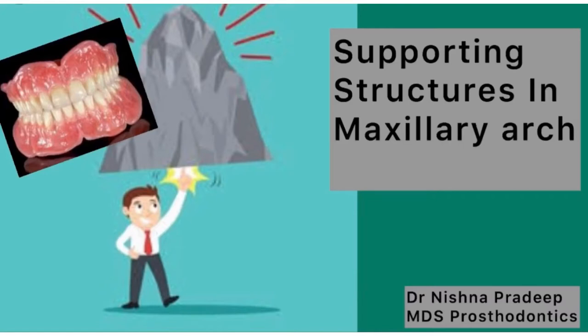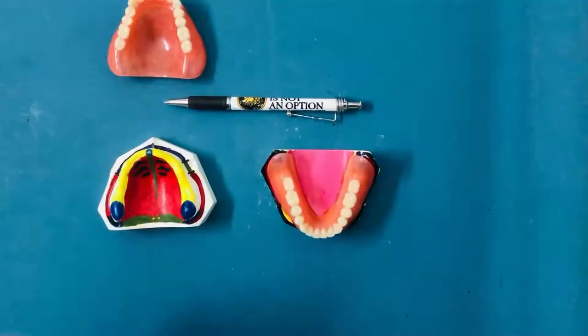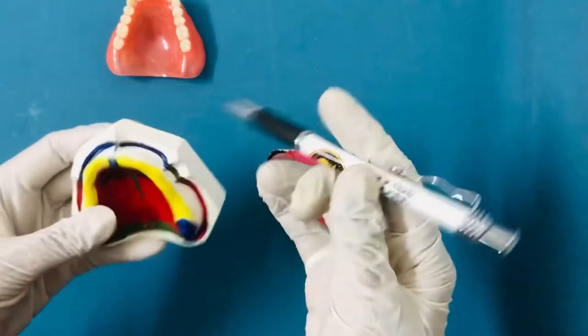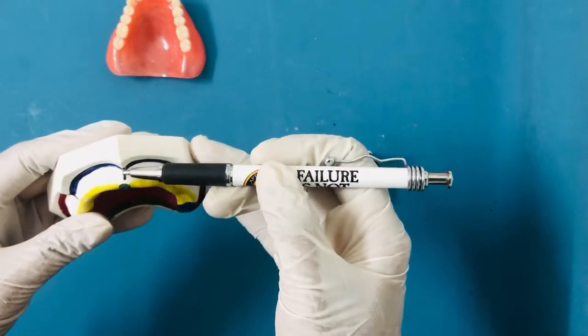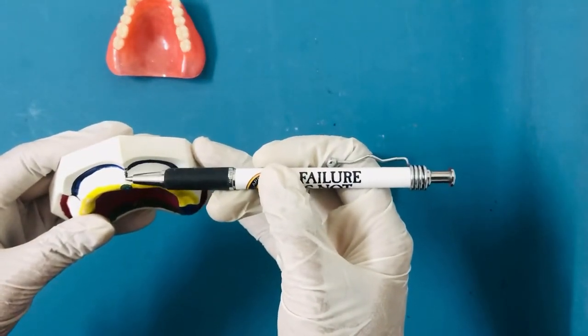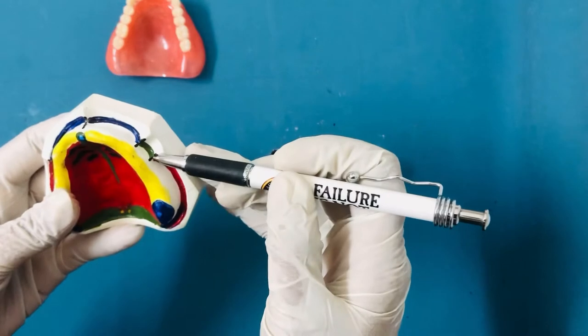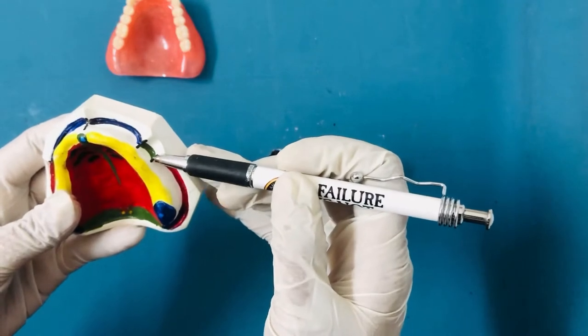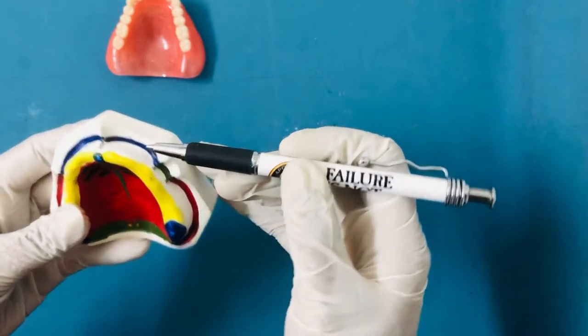Hello everyone. Today let's see the supporting structures in the maxillary arch. In my last video we went through the limiting structures — let me take a moment to recapitulate the same for the sake of continuity. Here we have the passive labial frenum, marked in blue, and these two are the buccal frenums with active muscle attachments.